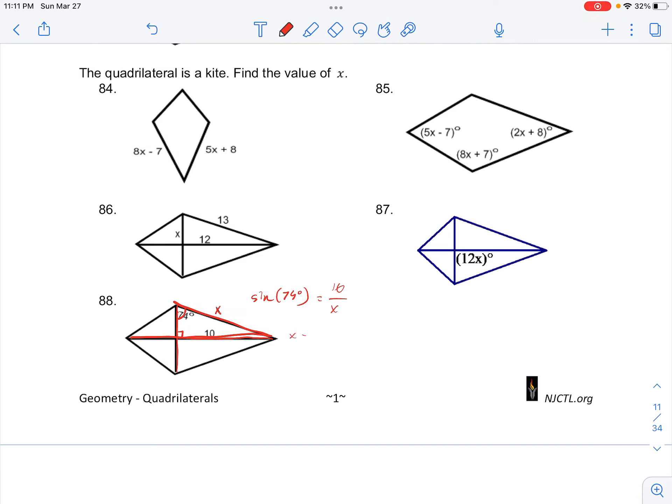So rearranging for x, we have 10 over sine of 74 degrees. And plugging this into your calculator, you get that x is equal to 10.4.